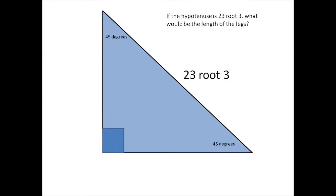If the hypotenuse is 23 root 3, what would be the length of the legs? Since the hypotenuse is 23 root 3 units long, the leg is 23 units long, because the leg multiplied by root 3 is the measure of the hypotenuse.